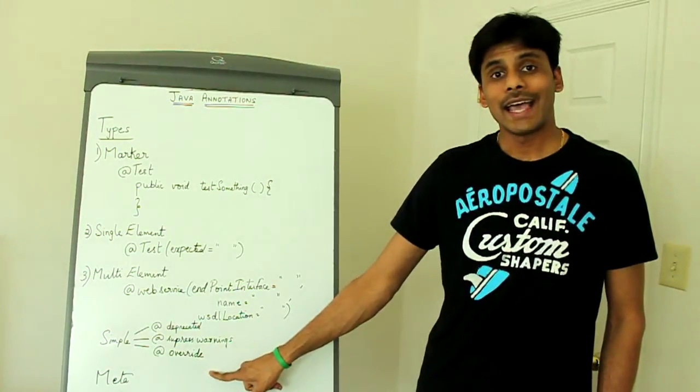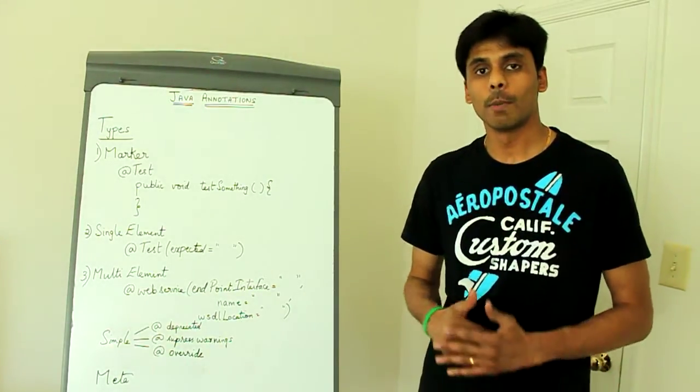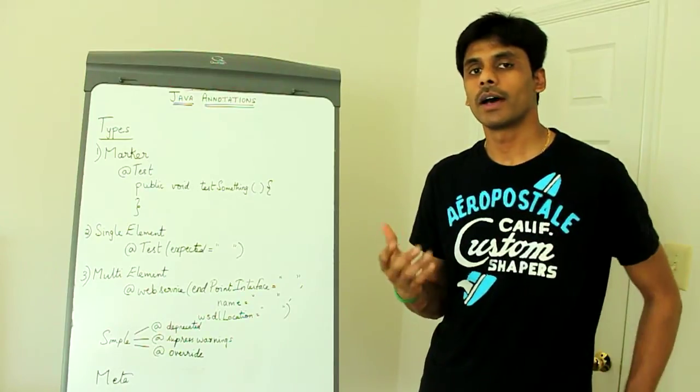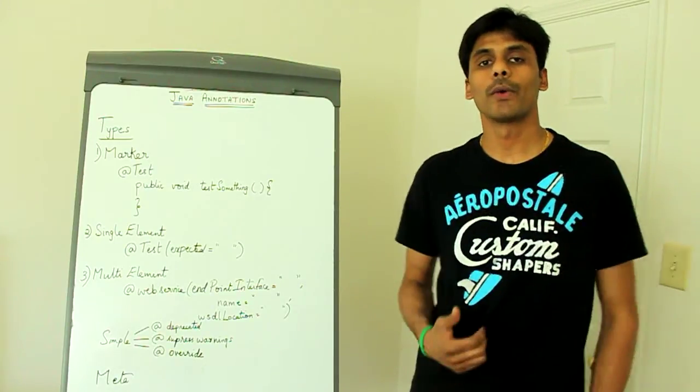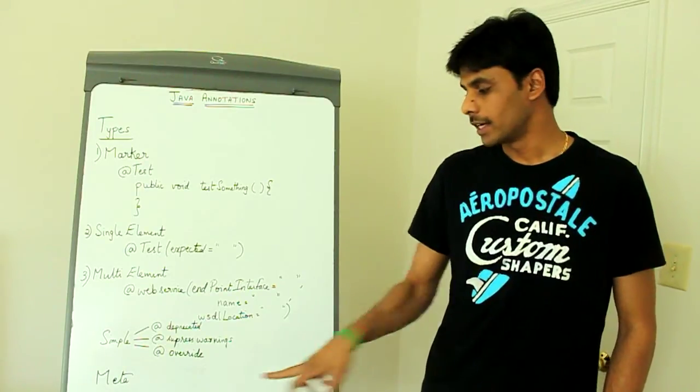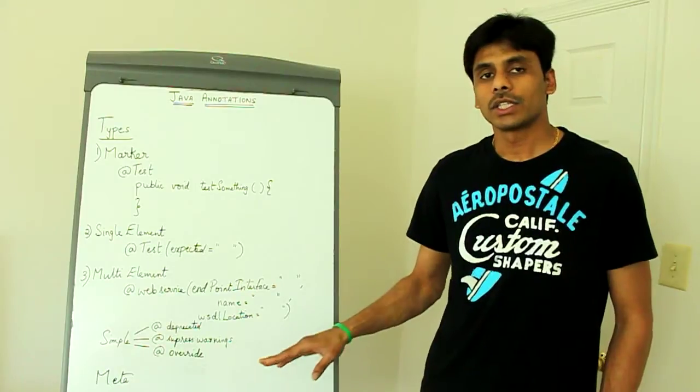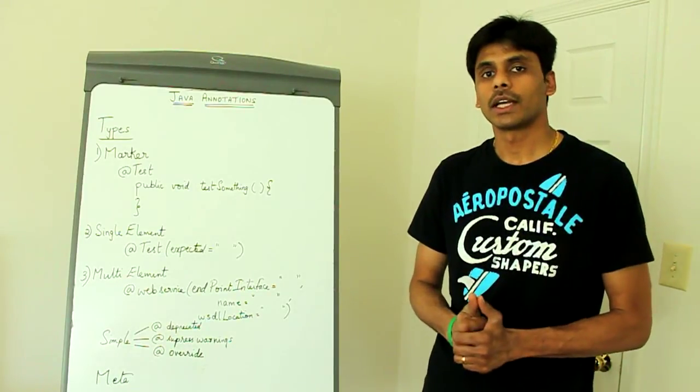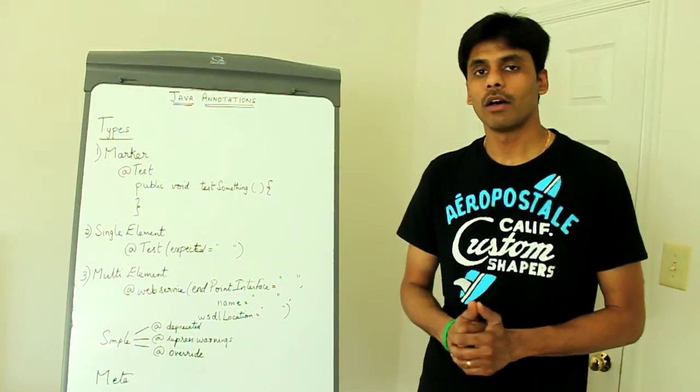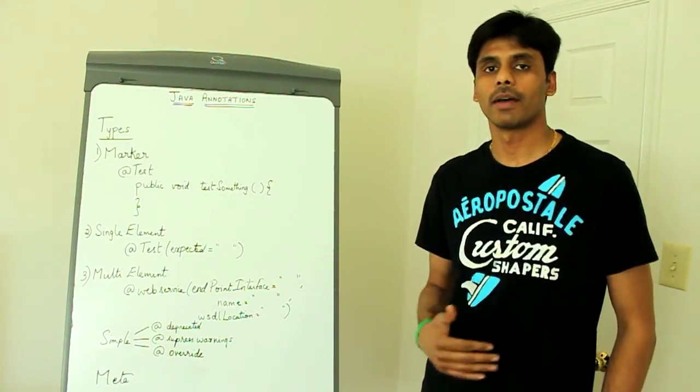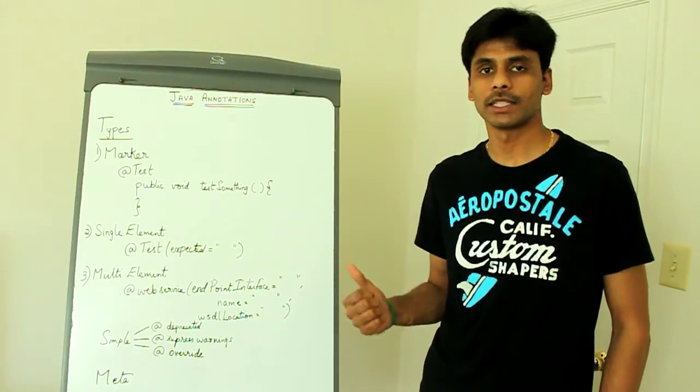The at override annotation is used to mark your inherited methods. So when you are extending a class and when you are overriding a method from that class and if you mark that particular method using the at override annotation in your subclass, then the Java compiler makes sure that you have followed the rules of overriding it. That is the method signature matches that of the parent's method signature.